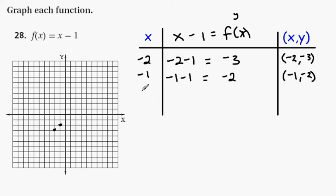Let's go with 0. So, substitute 0 in for x. 0 minus 1 results in negative 1. So, my ordered pair here is 0, comma, negative 1. 0, negative 1 is right here.